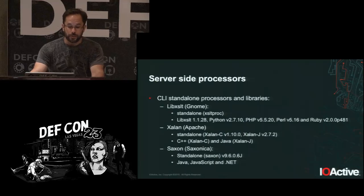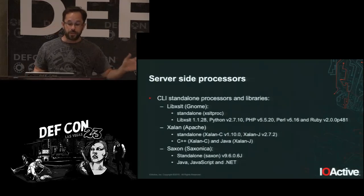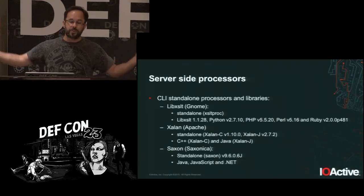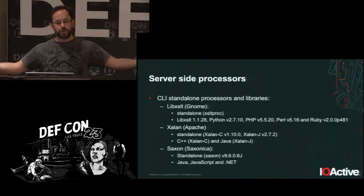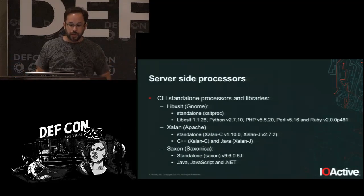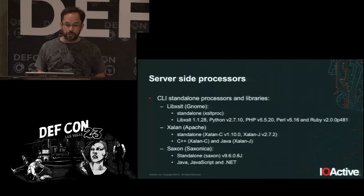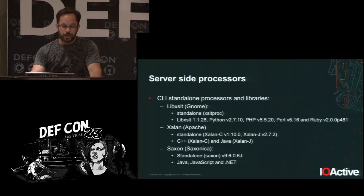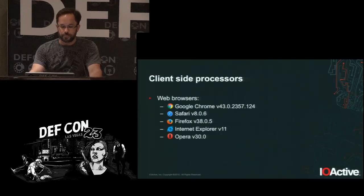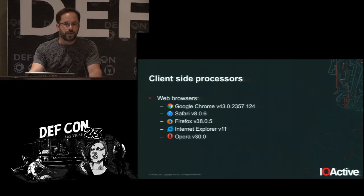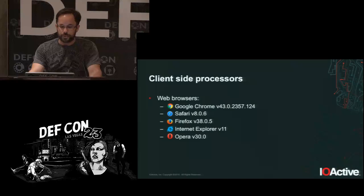The main processor libraries are developed by Nomi, Apache, and Saxonica. LibXSLT is the most widely deployed — implemented by both server-side and client-side processors, including web browsers. You also have Xalan developed by Apache, which comes in C++ and Java flavors, and similarly Saxon. All testing was done on the latest available versions of all server-side libraries and web browsers.